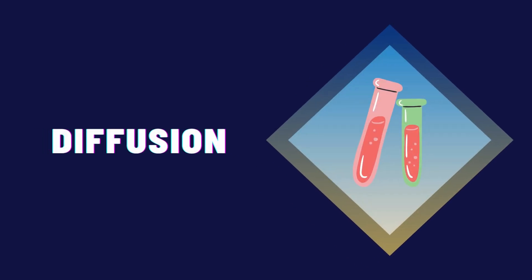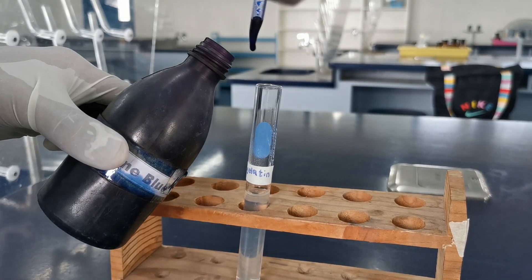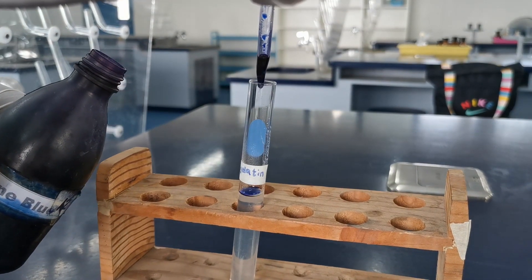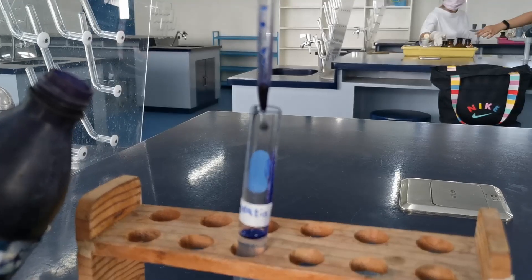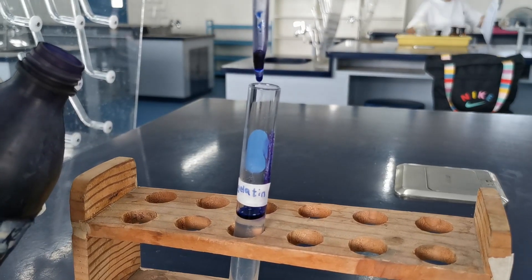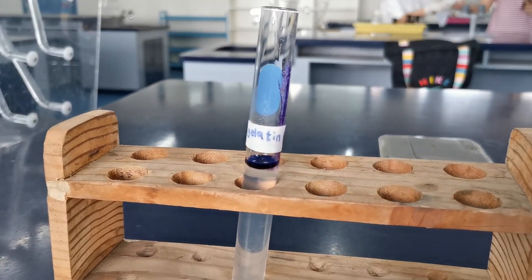Next, we have the diffusion test. In a prepared gelatin in a test tube, add 5 drops of methylene blue dye on the surface of the gel. Observe after 1 hour, 2 hours, and 3 hours.